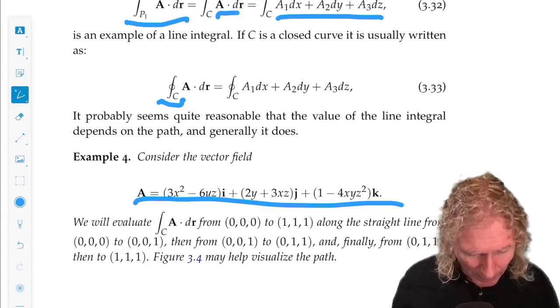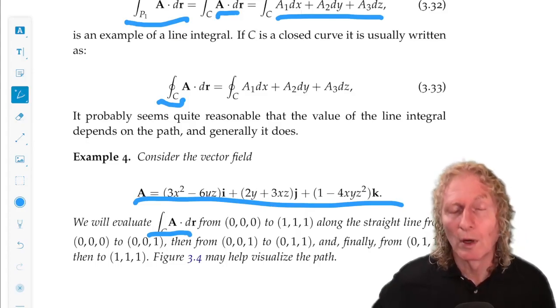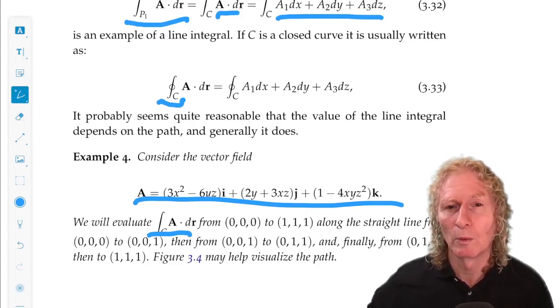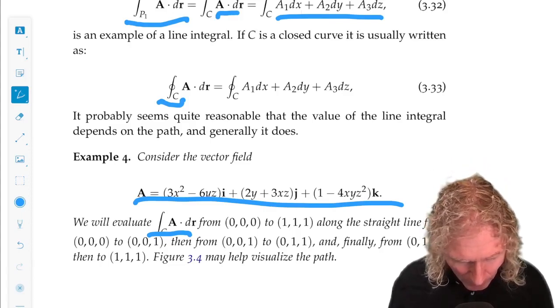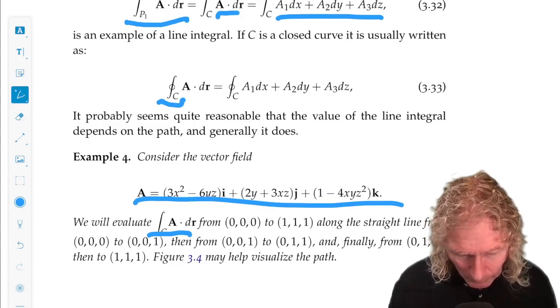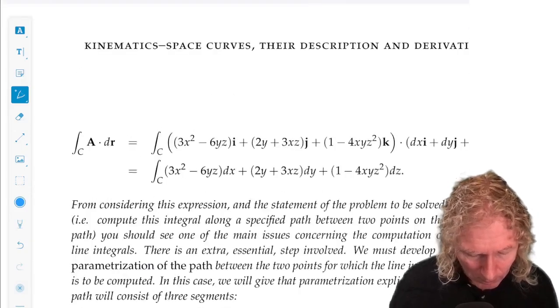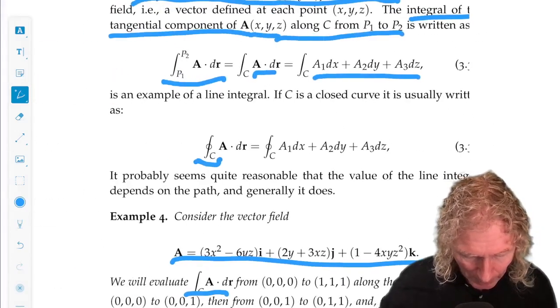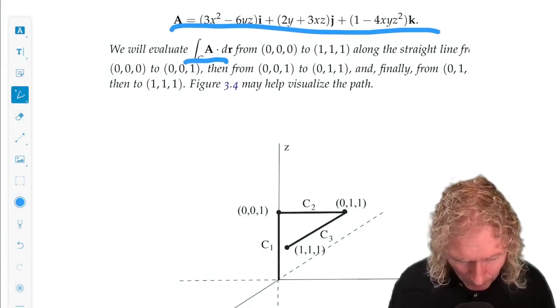So let's consider a very concrete example of a vector field. And let's evaluate A dot dr from the origin 000 to the point 111. But now I specify the path along straight lines from, well, it's best to just draw a picture, which I had below.